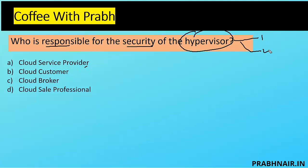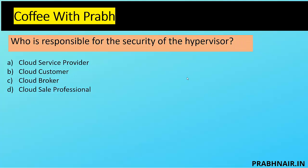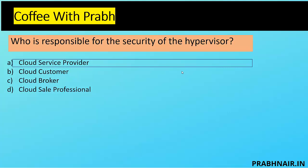We have two types of hypervisors: Type 1, where we have bare metal on which we host, and Type 2, where we have an OS on top and install VMs. But primarily in the cloud, the primary responsibility lies with the service provider. Option B, cloud customer, only has access to their abstract machine, so B is not the answer. A cloud broker helps with integration when we need to integrate multiple services, mostly in PaaS and SaaS environments. A cloud sales professional sells cloud services and is not technical in nature. Primarily, the answer is A, cloud service provider, and option D is somewhat part of A.